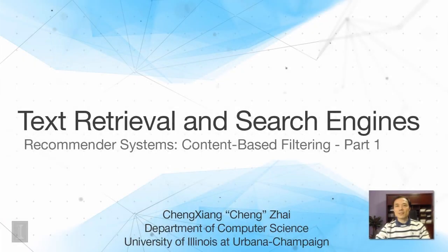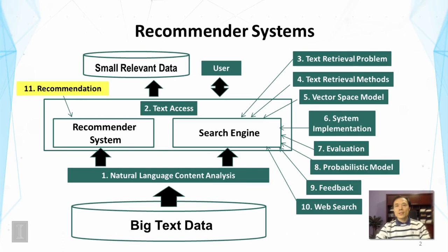This lecture is about recommender systems. So far we have talked about a lot of aspects of search engines — the problem of search, the ranking problem, different methods for ranking, implementation of the search engine, and how to evaluate it. Web search engines are by far the most important applications of text retrieval and the most useful tools to help people convert big raw text data into a small set of relevant documents.